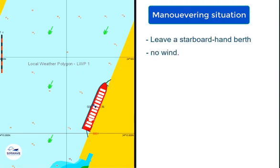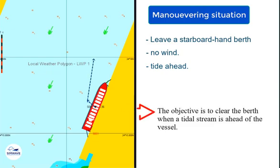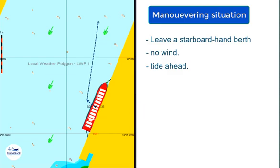This simulation run demonstrates how to handle a ship unberthing a starboard hand berth, in a condition of calm wind with tide ahead. The objective is to clear the berth when a tidal stream is ahead of the vessel.